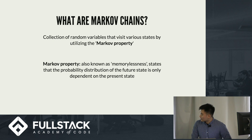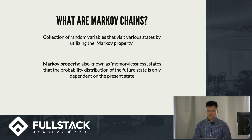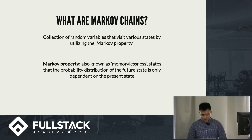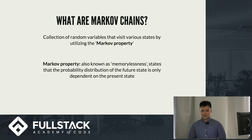So what are Markov chains? Well, they're a collection of random variables that can visit various states by utilizing something called the Markov property. And what is the Markov property? It can also be known as memorylessness, which states that the probability distribution of the future state only depends on the present state. So you don't necessarily need to know the entire history at the point where you are.